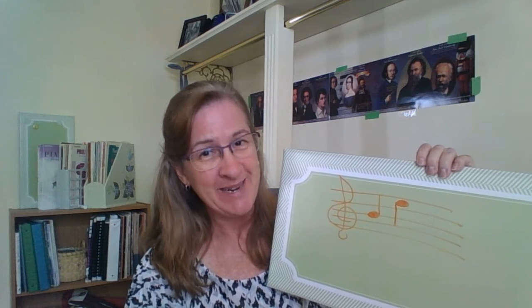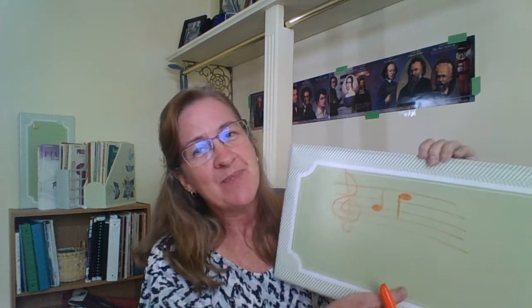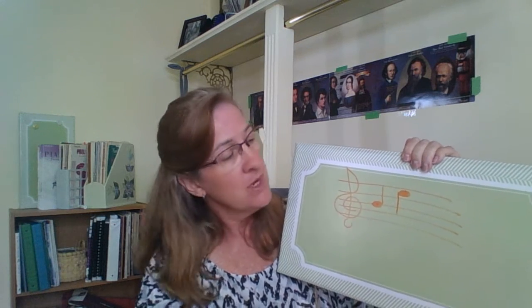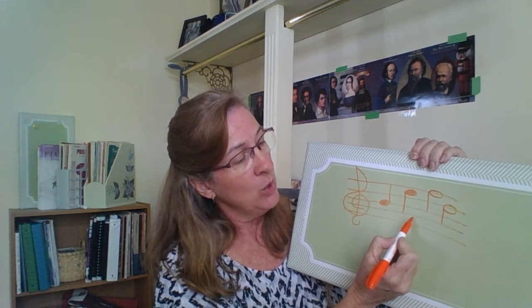I think it just looks better that way — that is the norm. So why do the note stems go up or down? When you have notes that are high on the staff, you want the stem to go down. When you have notes that are low on the staff, you want the stem to go up.